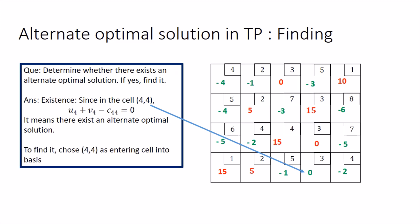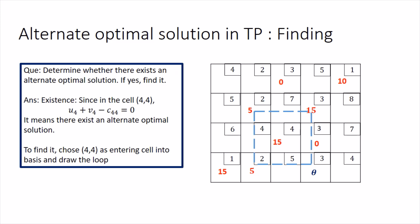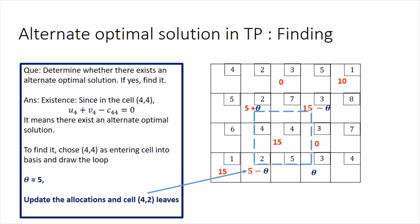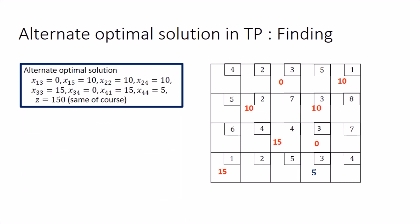Since we found a non-basic cell with UI plus VJ minus Cij equal to zero, the answer is yes — there exists an alternate optimal solution. We choose cell (4,4) as the entering cell and complete the iteration. Allocating theta units and following the UV method procedure, we draw the loop and alternately subtract and add theta from the corners. This gives theta equals five, cell (4,2) leaves the basis, and we obtain the new alternate optimal solution with the same transportation cost of 150.